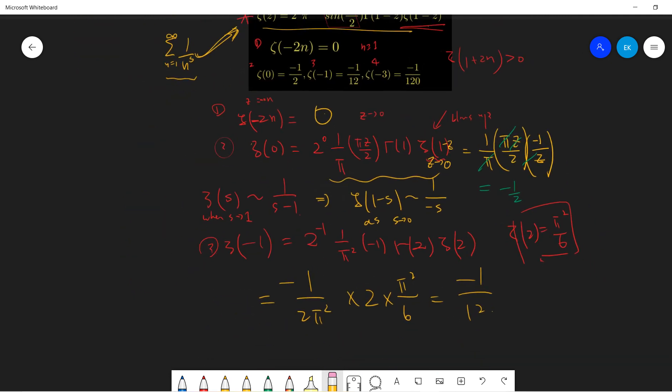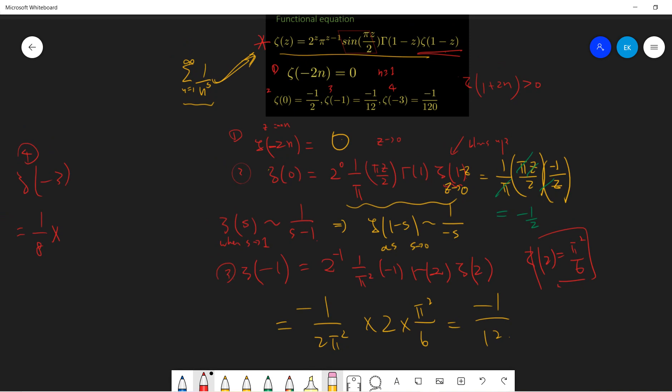Okay. So let's see the final one. The first one. ζ(-3), which is 1/8 times 1/π⁴ times sin(3π/2). So it's still -1 times Γ(4) times ζ(4), right?